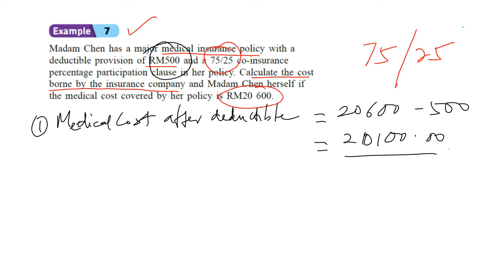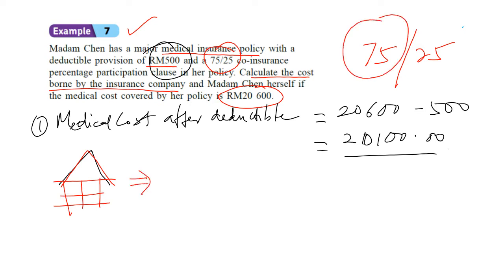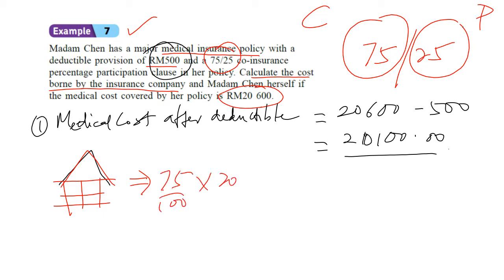Now, how much does the company pay? The company pays 75% of 20,100. So the company will pay 15,075 ringgit. The remaining 25% is for the policy holder.